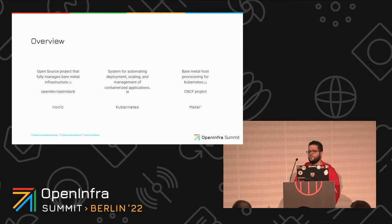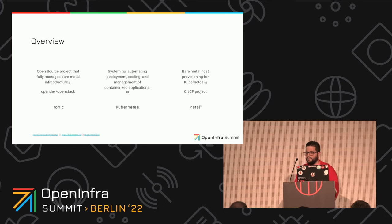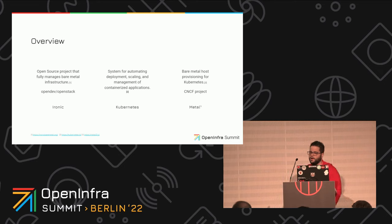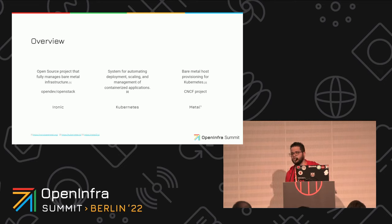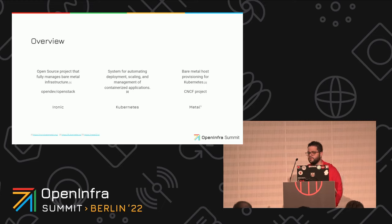Overview. Ironic is the open source project that we have to fully manage bare metal deployments and it's under OpenStack. Kubernetes is the system for automating deployments and scaling in containerized infrastructure. And then we have Metal3, that is the bare metal provisioner for Kubernetes — it's part of the CNCF project.